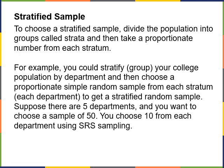In stratified sampling, we divide the population into groups called strata. You stratify your college population by department, for example, then choose a proportionate simple random sample from each stratum to get a stratified random sample. For example, if you have several departments — English, math, science, business, and music — and you want a sample of 50, you would select people from those departments and pick 10 at random from each department. That's what we call a stratified sample.